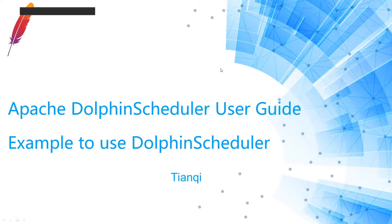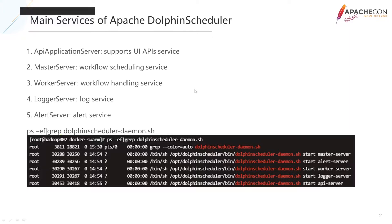This episode introduces how to use DolphinScheduler and publish a shell task. First we need to check whether DolphinScheduler services are running. DolphinScheduler contains five main services: API application server, responsible for providing UI interfaces; master server, responsible for whole workflow scheduling; worker server, responsible for specified workflow handling; logger server, responsible for recording task running status; and alert server, responsible for alerting abnormal and failure workflows.